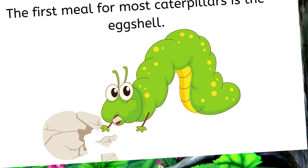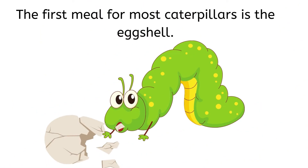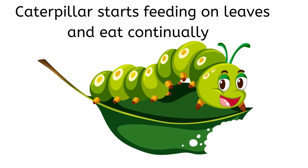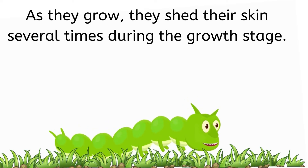The first meal for most caterpillars is their eggshell. And then caterpillars start feeding on leaves and eat continually. Caterpillars grow bigger and bigger. As they grow, they shed their skin several times during the growth stage.